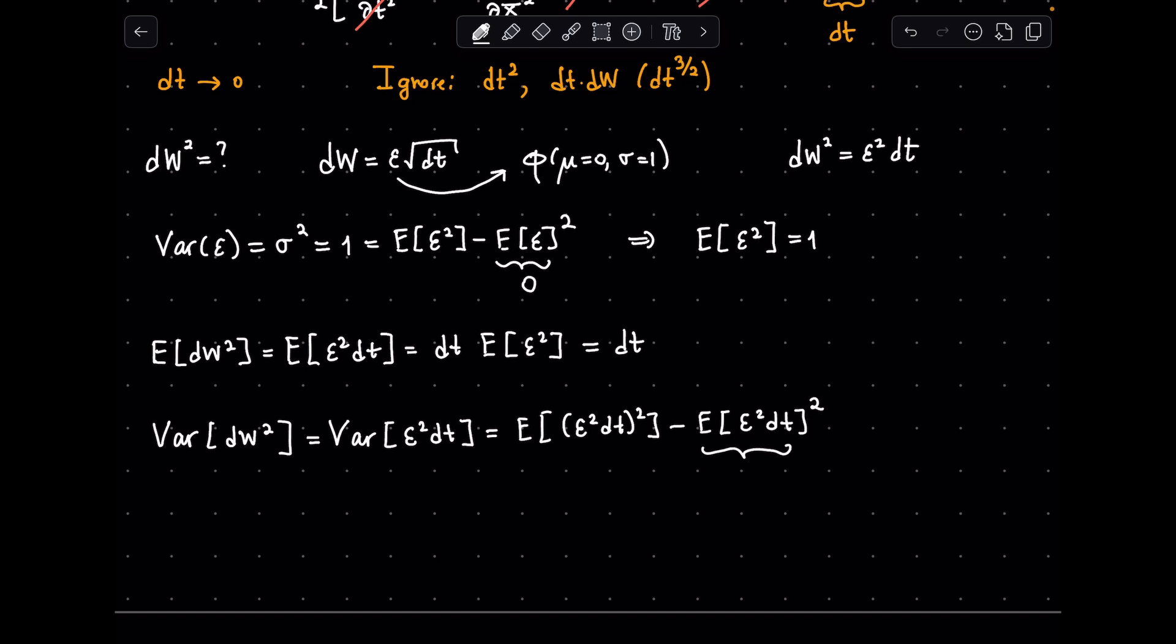This term is equal to dt squared from the above result. For this term, we take out dt squared. And this term is the fourth moment of standard normal distribution, which is known to give 3. So overall, we get 2 times dt squared for the variance of dw squared.